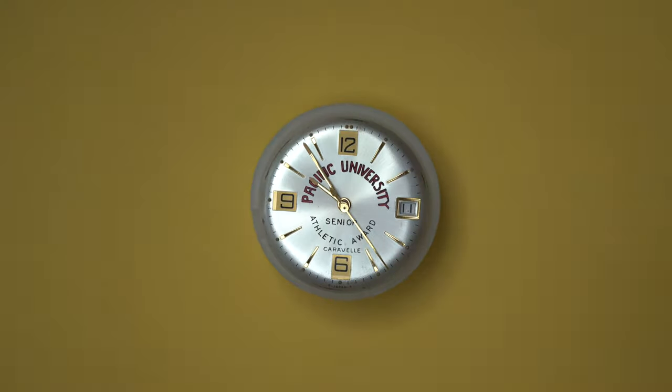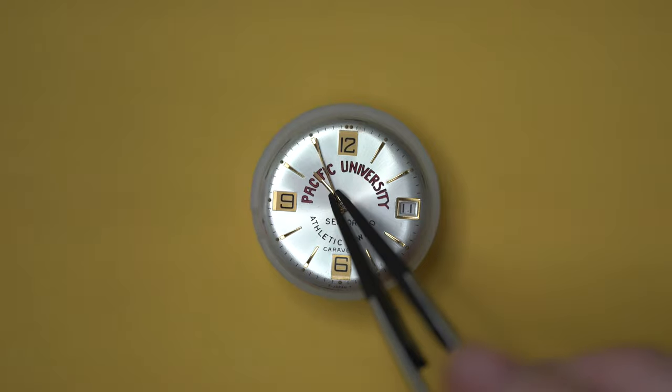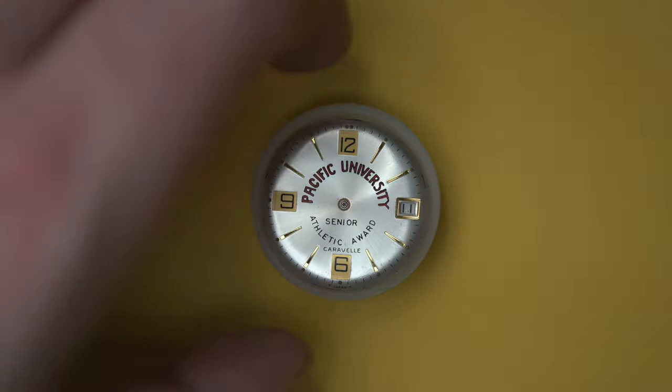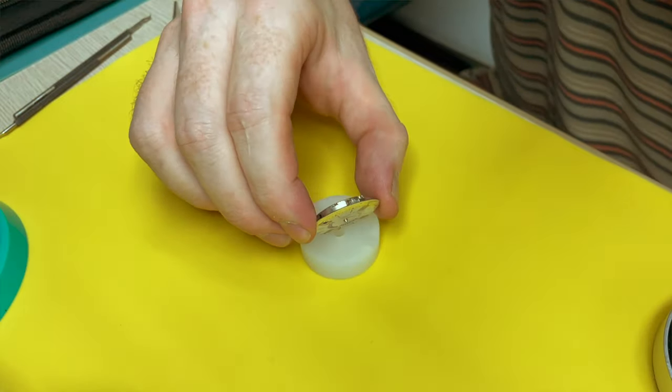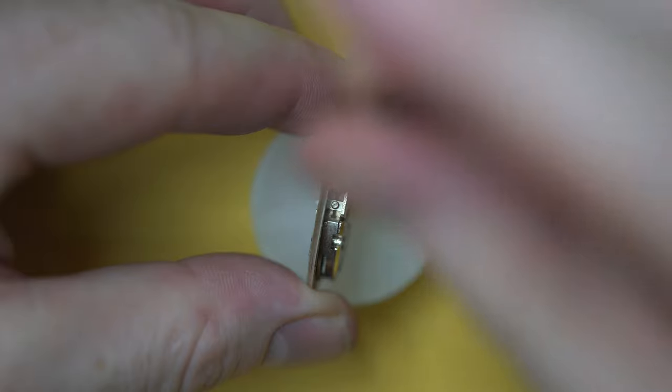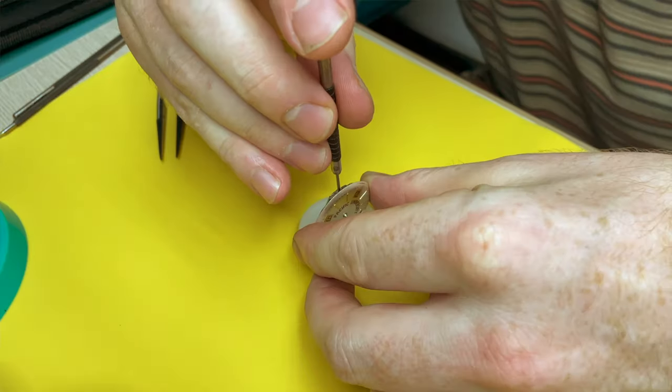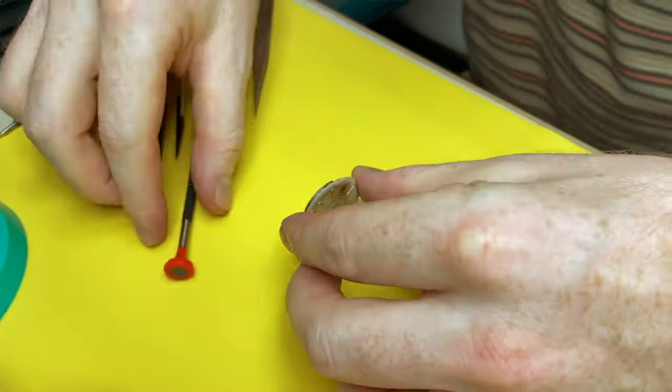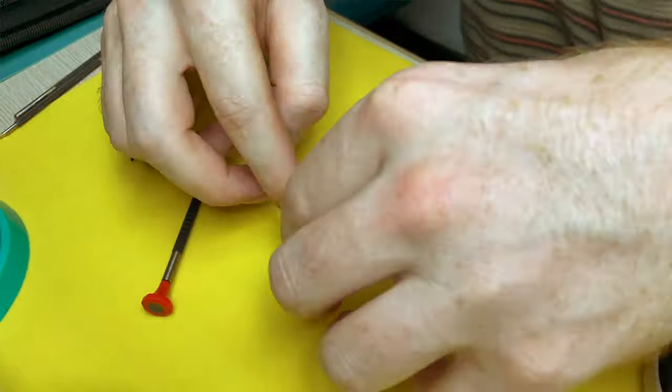Caravelle models typically use Japanese or Chinese movements. So they're not the most expensive of watches but they do have quite a good reputation for surviving. They're not the worst watches in the world but they're just not the most expensive either.